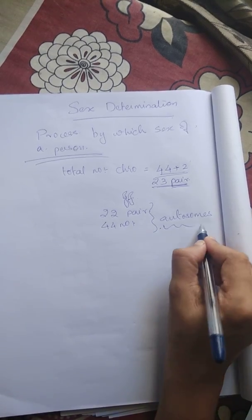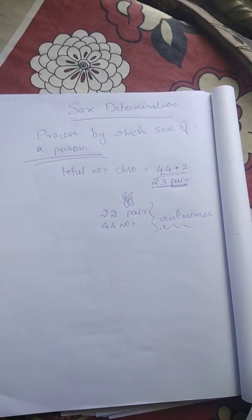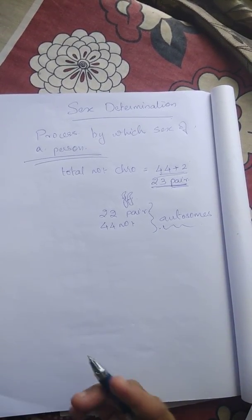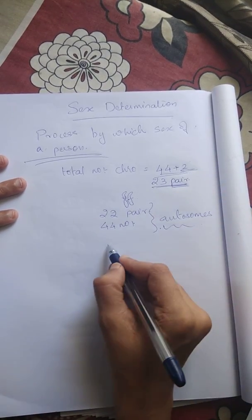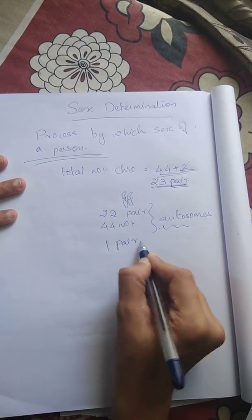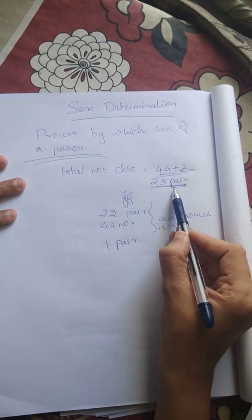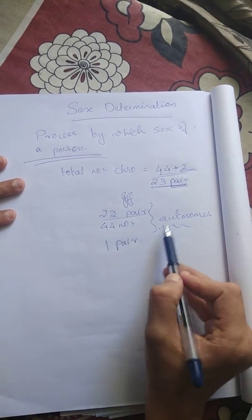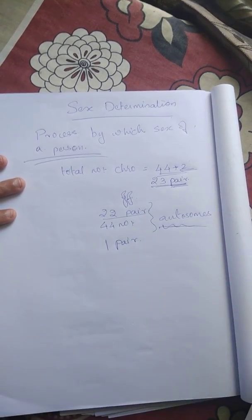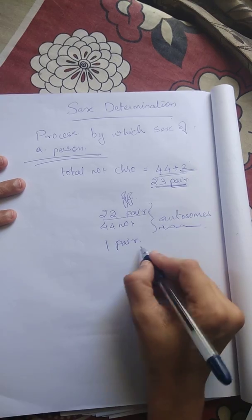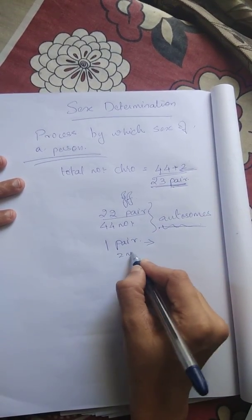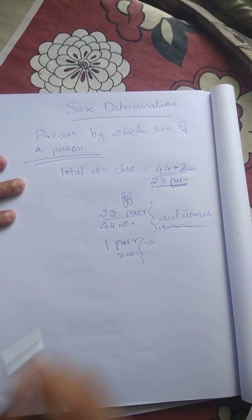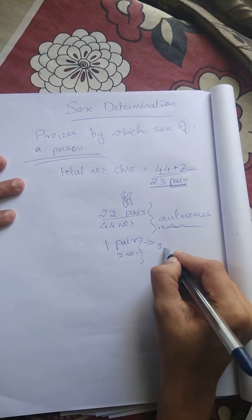Autosomes are included — one and two of them, making one pair. Most of them are 23 pairs total: 22 pairs called autosomes. That leaves us with one pair, two numbers — one pair — which is the sex chromosome.